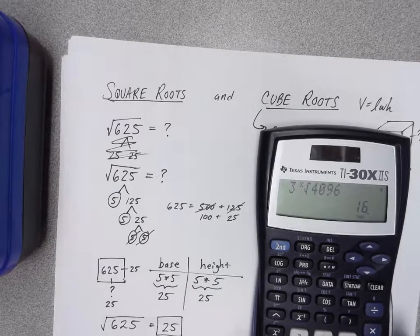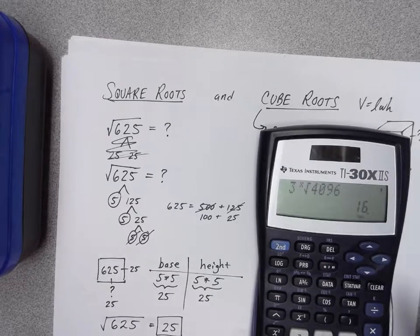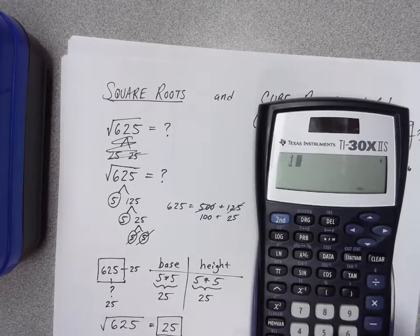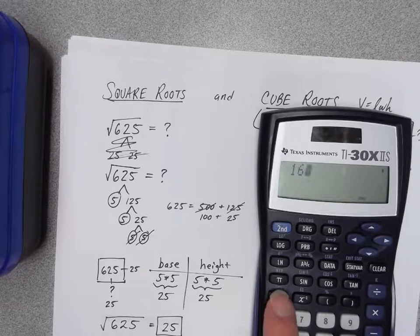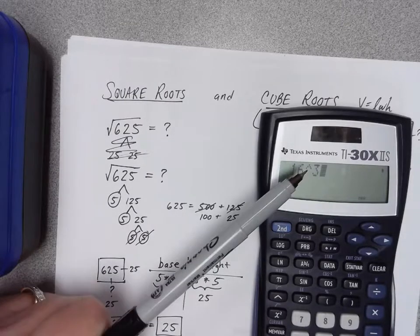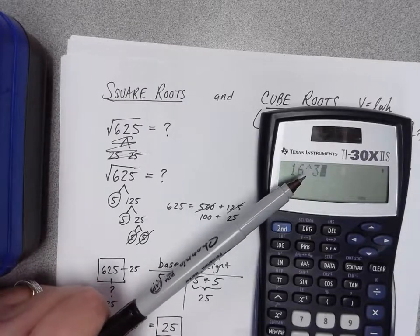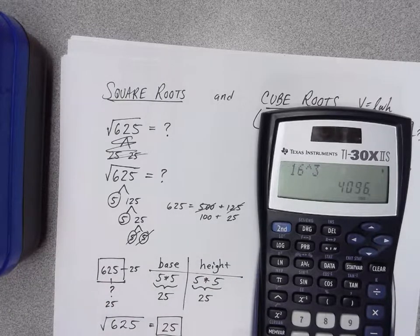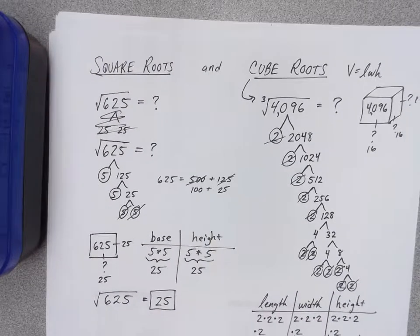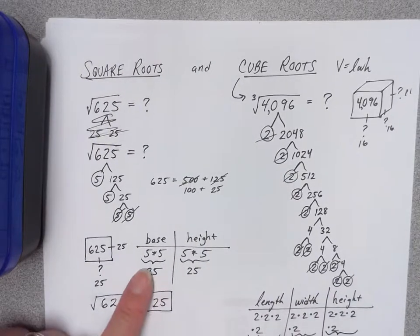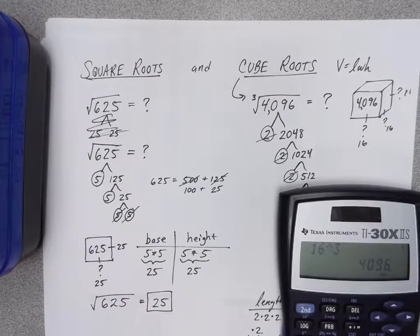To check: clear the screen, take the 16 you found and raise it to the third power. Press the insert button and enter 3 as your exponent — it will appear as a superscript. Press equals and it takes you right back to 4096. It checks out. Square roots and cube roots — know how to do them longhand, especially as you move into eighth grade math. Remember how many groups belong to each, and use the calculator for double-checking.